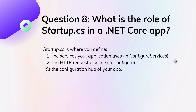Eighth question: what is the role of the Startup.cs class in a .NET Core app? The Startup.cs class is where you define the services your application uses via ConfigureServices, and configure the HTTP request pipeline via Configure. It is the configuration hub for your application — all things that need to be configured are set up in the Startup.cs file.